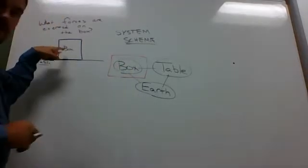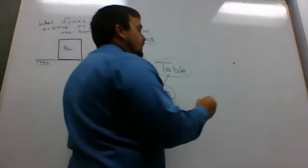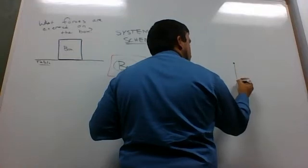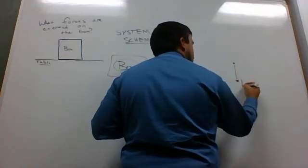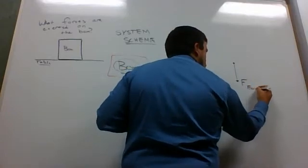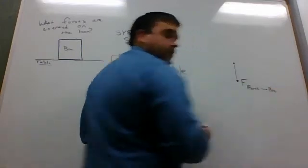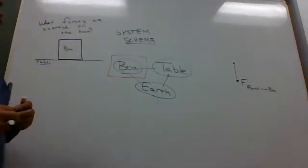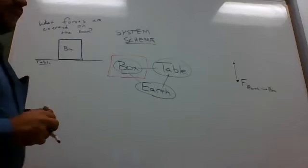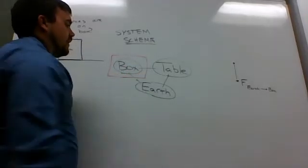Let's start with the earth on the box. Because I know that the box is being held down due to gravity, force is a vector. And so I'm going to show that vector quantity going down. And I'm going to label that force of earth acting on the box. So, force of earth on box. Then I'm going to consider my system schema here. That takes care of this force. That's taken care of.